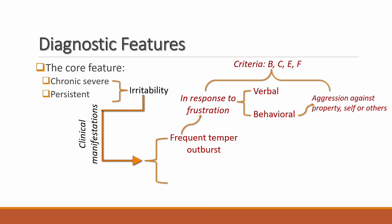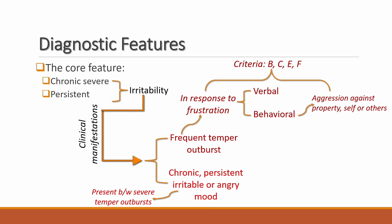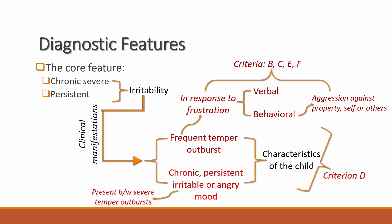The second prominent clinical manifestation is chronic, persistent irritability or angry mood that is present between the severe temper outbursts. Keep in mind that this must be characteristic of the child — DMDD is a childhood disorder. It must satisfy criterion D, meaning it should persist for most of the day, nearly every day, and be noticeable by others in the child's environment.